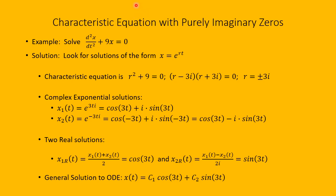Let's look at an example of a differential equation that has a characteristic equation with purely imaginary zeros. If we look for solutions of the form x equals e to the rt, where r could be complex, the characteristic equation for x'' + 9x = 0 is r squared plus 9 equals 0. Solving this, r equals plus or minus 3i — two purely imaginary solutions that are complex conjugates of each other.